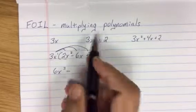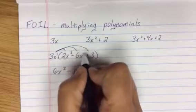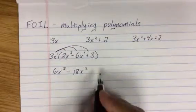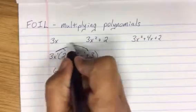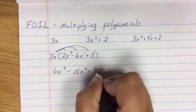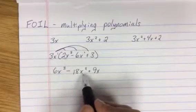3x times 6x gives me 18x² because there is always a power of one. One plus one is two. The sign drops. We go to the third term. 3x times 3 gives us 9x. That is multiplying a monomial into a polynomial.